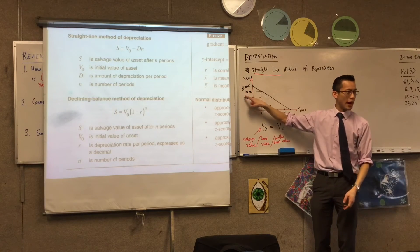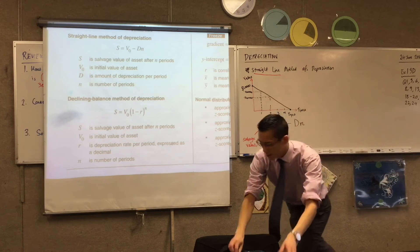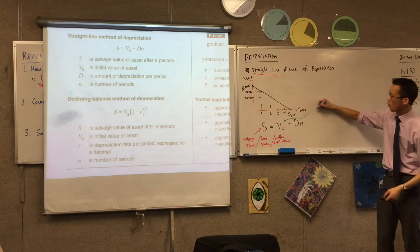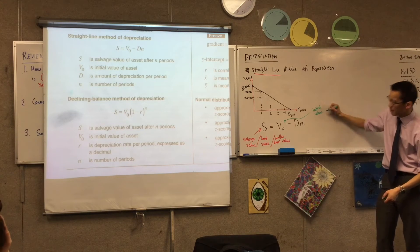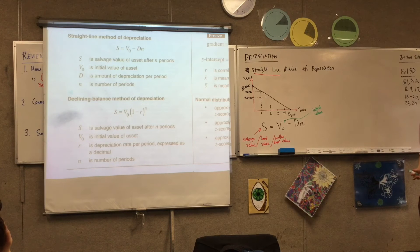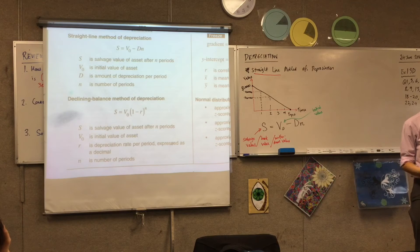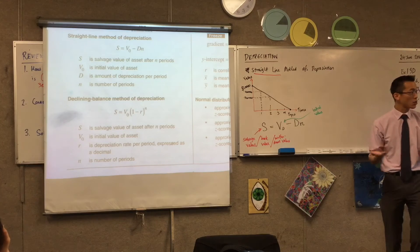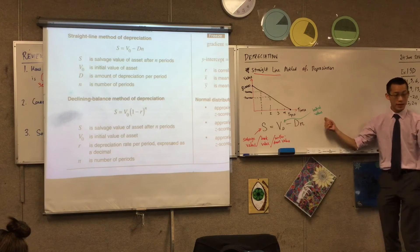So that's the salvage value — what am I worth at this current point in time? And then what are the rest of these things? V naught stands for initial value. The V is obviously for value. Why do you think they have a naught in there? Zero is like the time — after zero years or zero days, no time has passed, you just bought it brand new. That's the initial value.